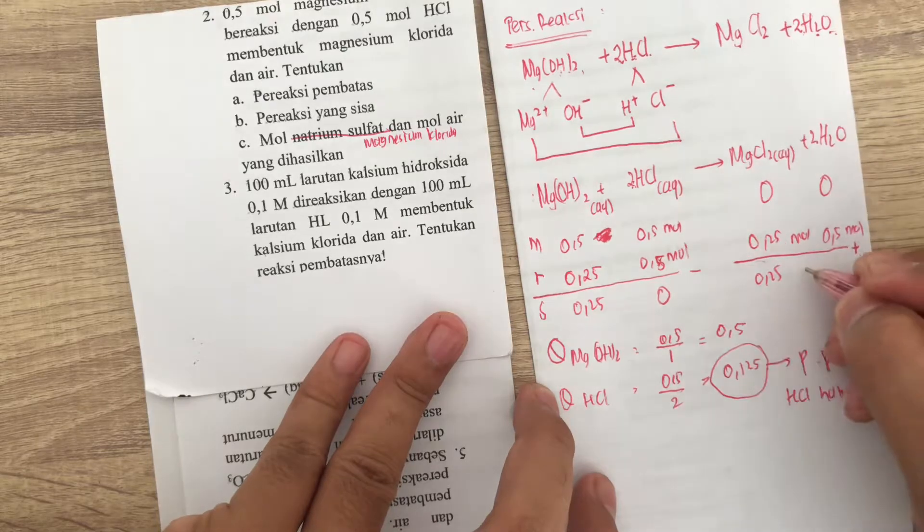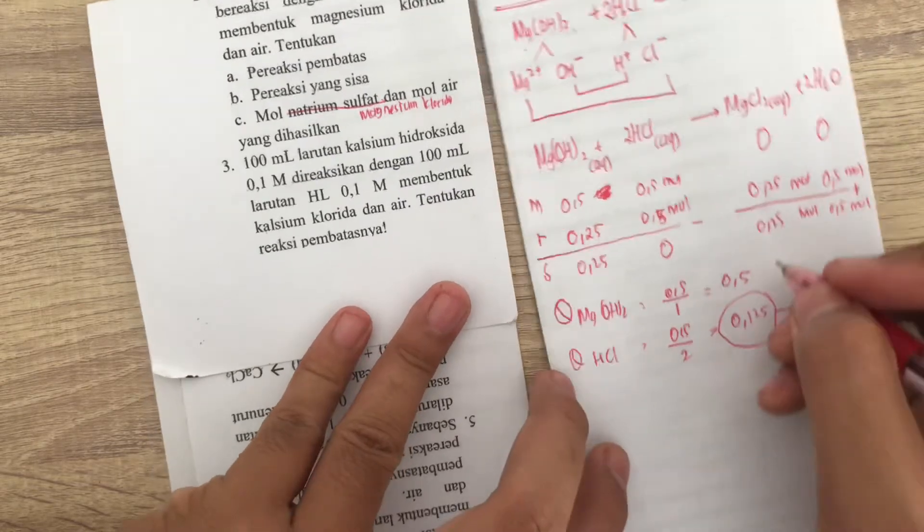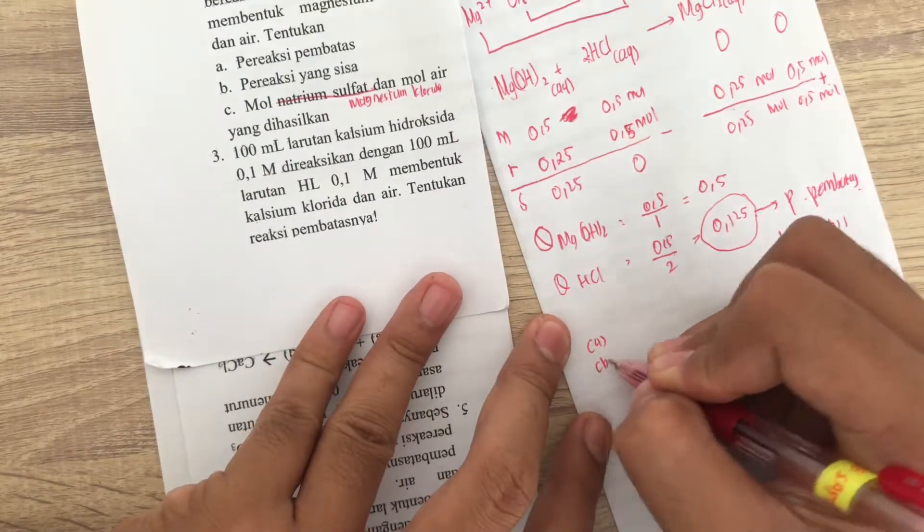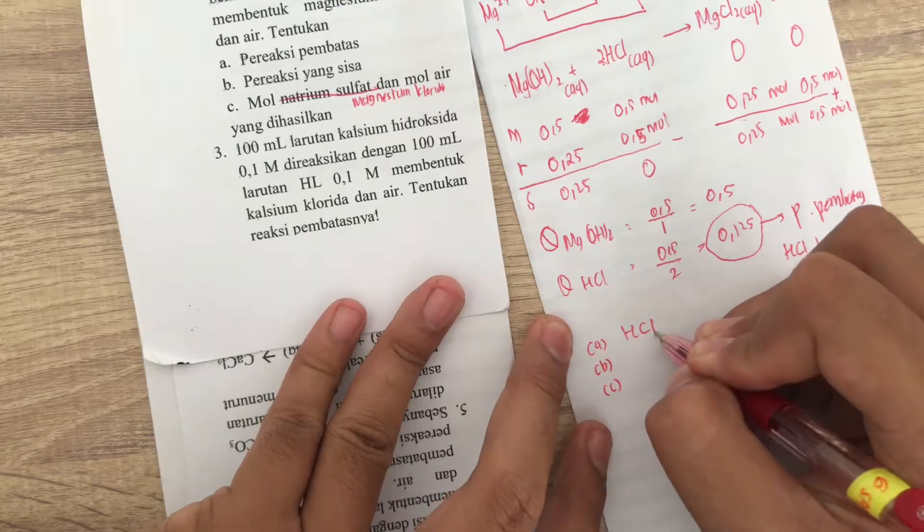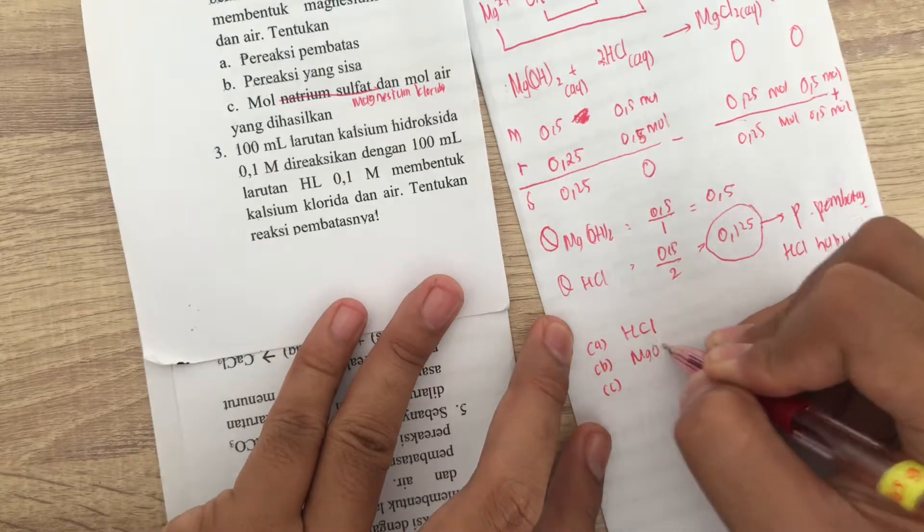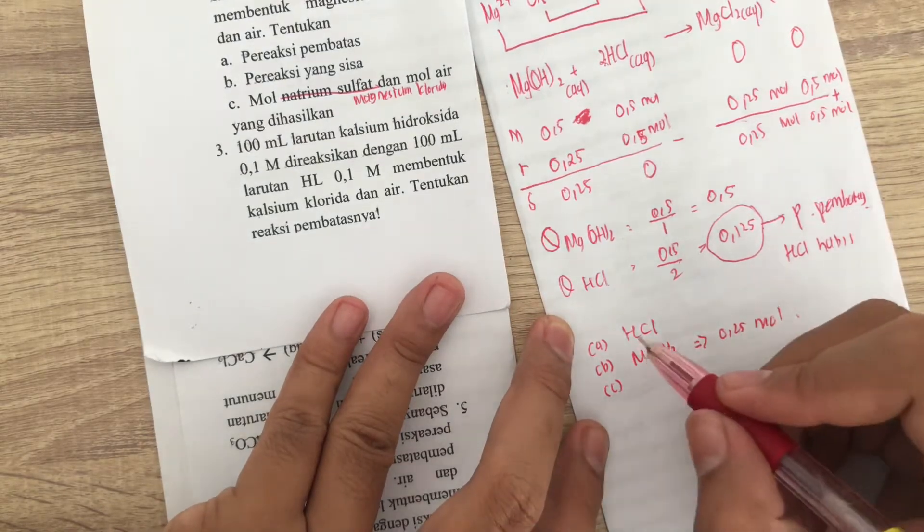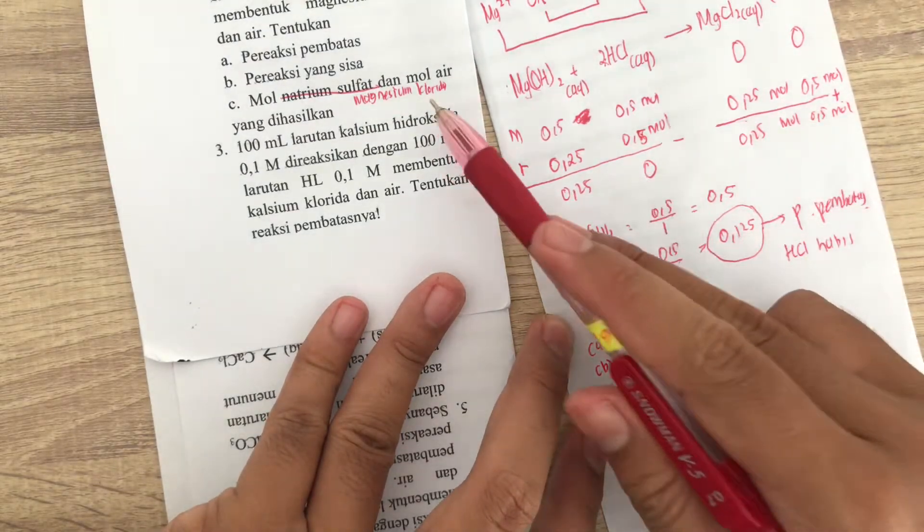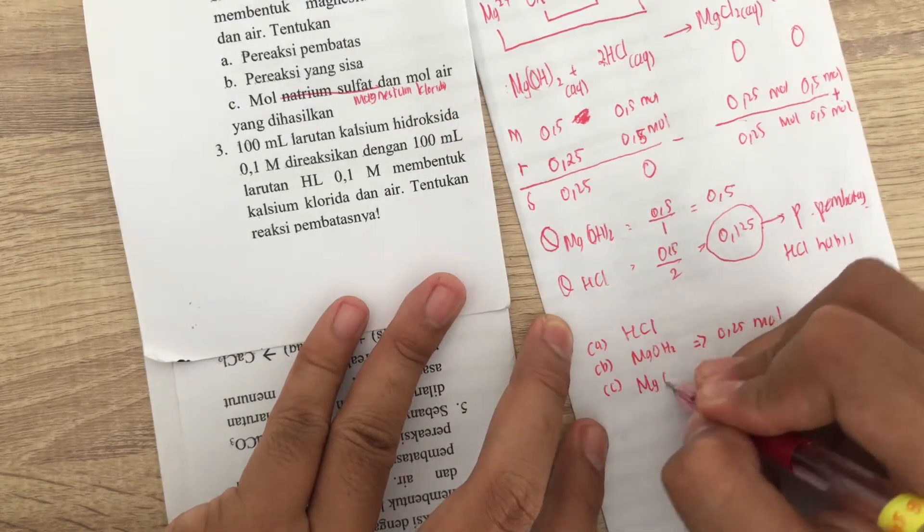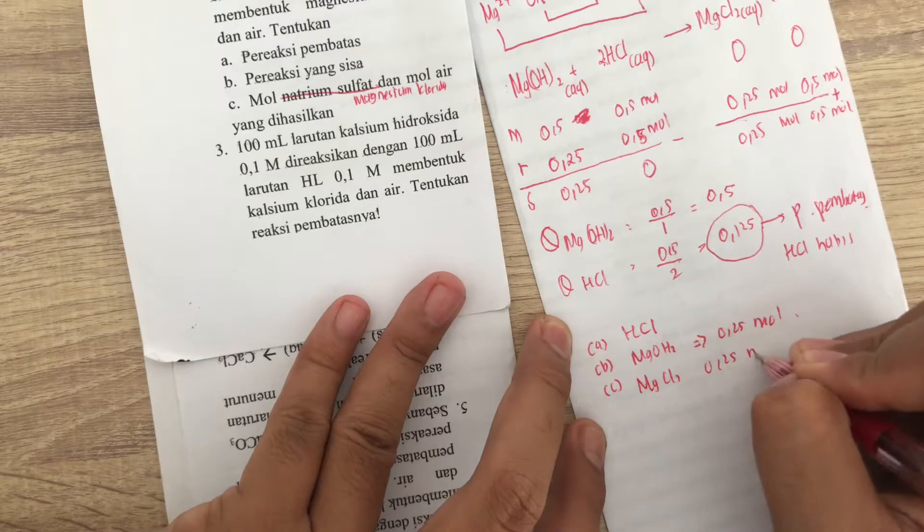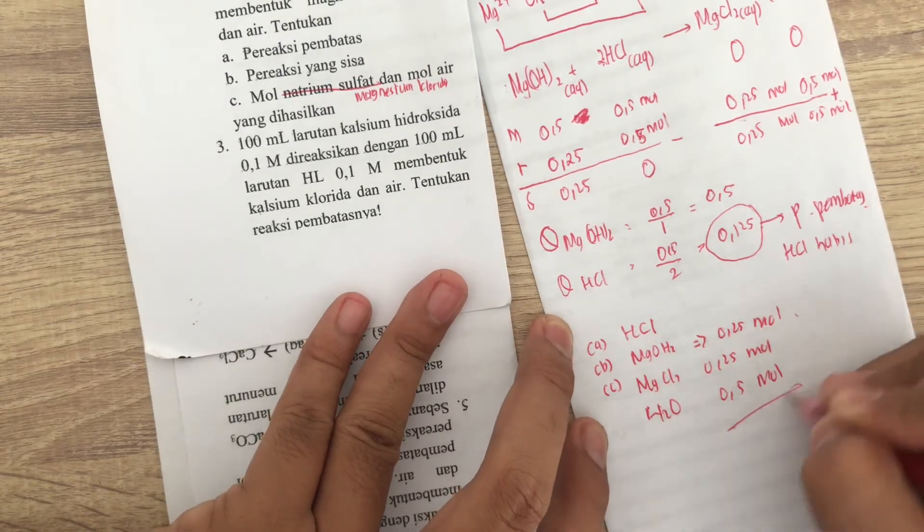Produk itu kan 0, mula-mulanya nggak ada. Berarti kita bisa jawab pertanyaan. Pertanyaan A, B, C. Pereaksi pembatasnya siapa? HCl. Pereaksi yang sisa Mg(OH)2. Berapa sisanya? 0.25 mol. Kalau mol magnesium klorida dan mol air, berarti dia adalah MgCl2-nya 0.25 mol. H2O-nya berarti dia adalah 0.5 mol. Selesai deh.